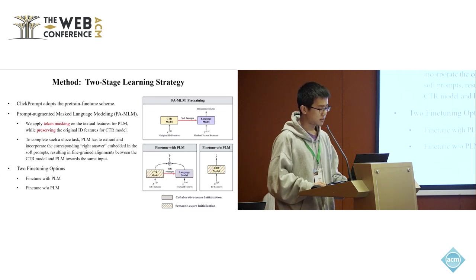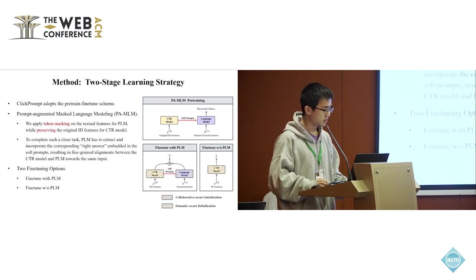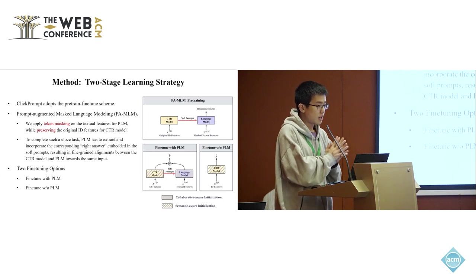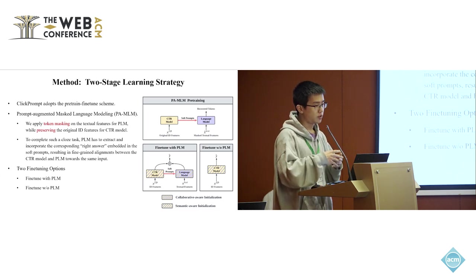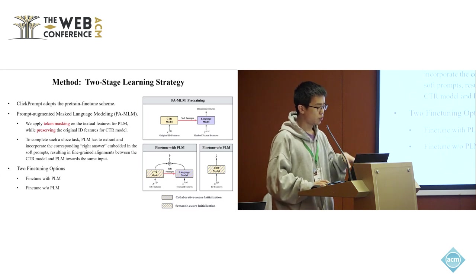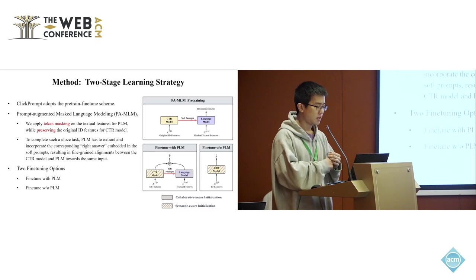In this stage, we apply token masking on the textual features for language models while preserving the original ID features for the CTR model. The overall objective is simple—we want to recover the masked tokens. In this way, we can see that the language model has to recover the masked tokens not only based on the language context, but also extract and incorporate the right answer embedded in the soft prompts.